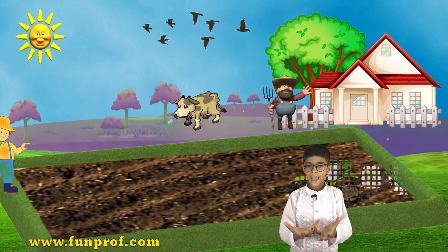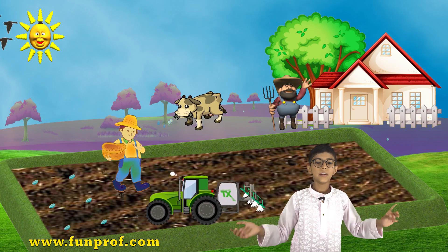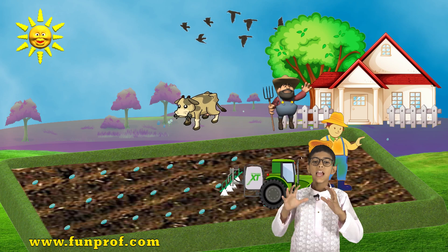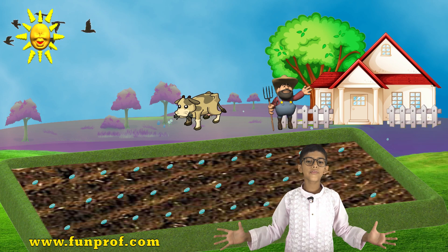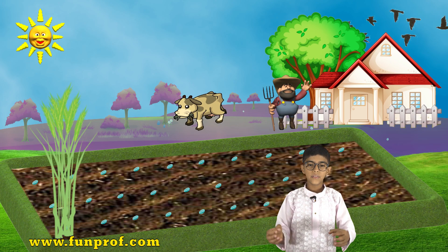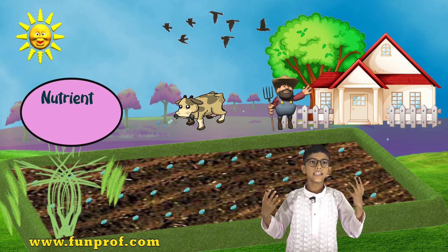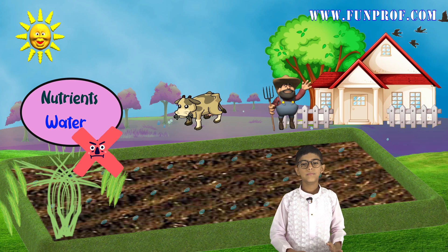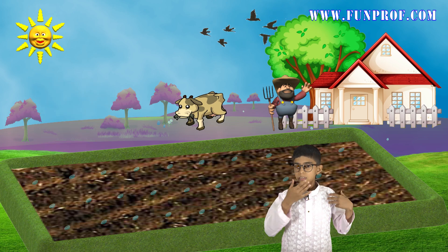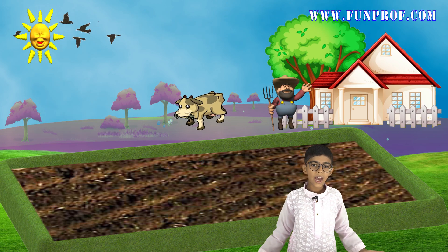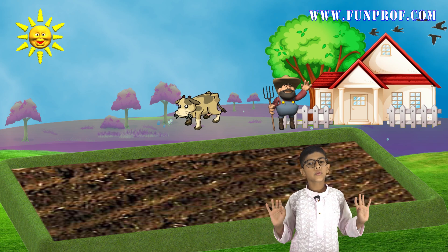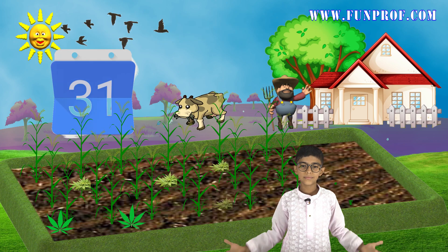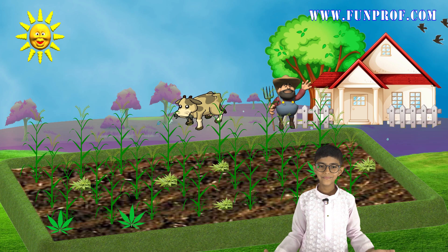Now we have some seeds. We will sprinkle them, but we will make sure that there are only a few seeds at each place, because if there are many seeds at a place they will all fight for nutrients and water, so they will not grow nicely. Now we will wait for 20 or more days so that they grow.